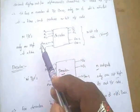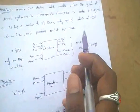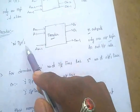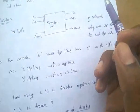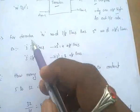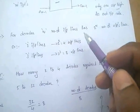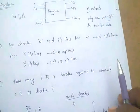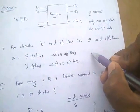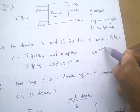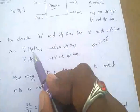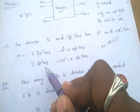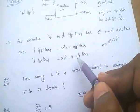To recap: an encoder converts any form to binary or coded form, while a decoder converts coded form to normal form. For a decoder, n input lines produce 2-power-n output lines. For example, 2 input lines give 2² = 4 output lines, and 3 input lines give 8 output lines.